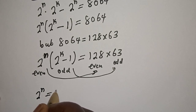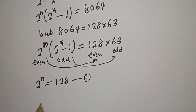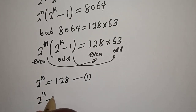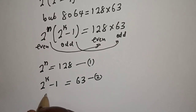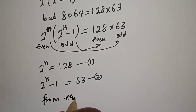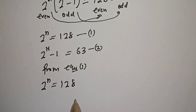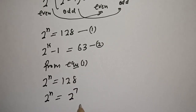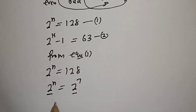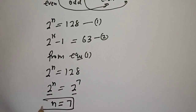From this comparison, equation 1 gives us: 2 raised to power n is equal to 128. Since 128 is equal to 2 raised to power 7, and they have the same base 2, therefore n is equal to 7. This is the value of n.